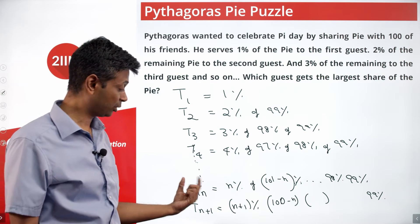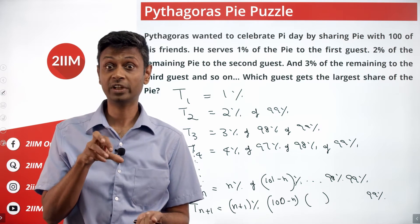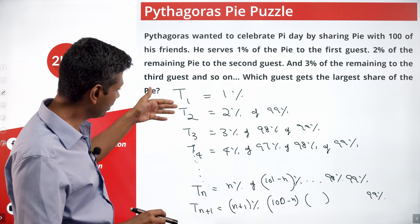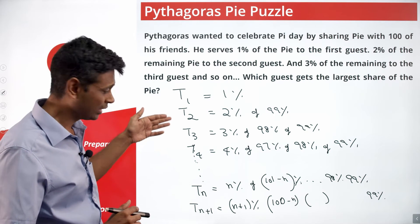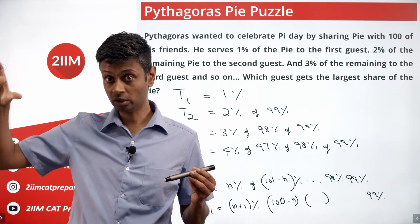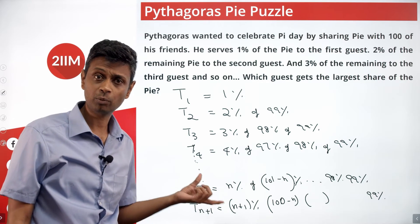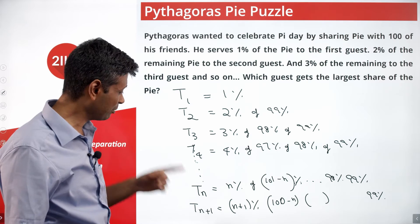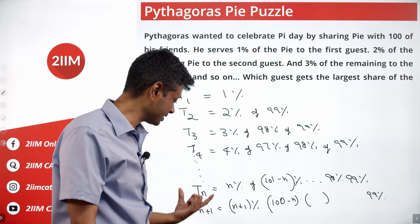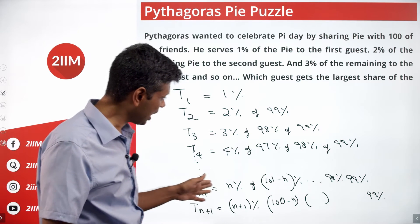So Tn is what's taken by the Nth guest, and Tn+1 by the (N+1)th guest. Notice: the first guy takes 1%, the second takes 2% of 99% - slightly more. Third takes 3% of a still very large number - slightly more. T1 to T2 increases, T2 to T3 increases, T3 to T4 likely increases too. At some point one guest gets the maximum, after which it keeps falling. We want to find the point where Tn+1 becomes less than Tn.